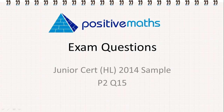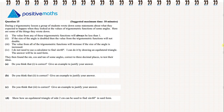In this video for Positive Maths, we're going to look at the Junior Certificate Higher Level 2014 sample paper. This is question 15 from paper 2. During a trigonometry lesson, a group of students wrote down some statements about what they expected to happen when they looked at the values of trigonometric functions of some angles. Here are some things they wrote down.